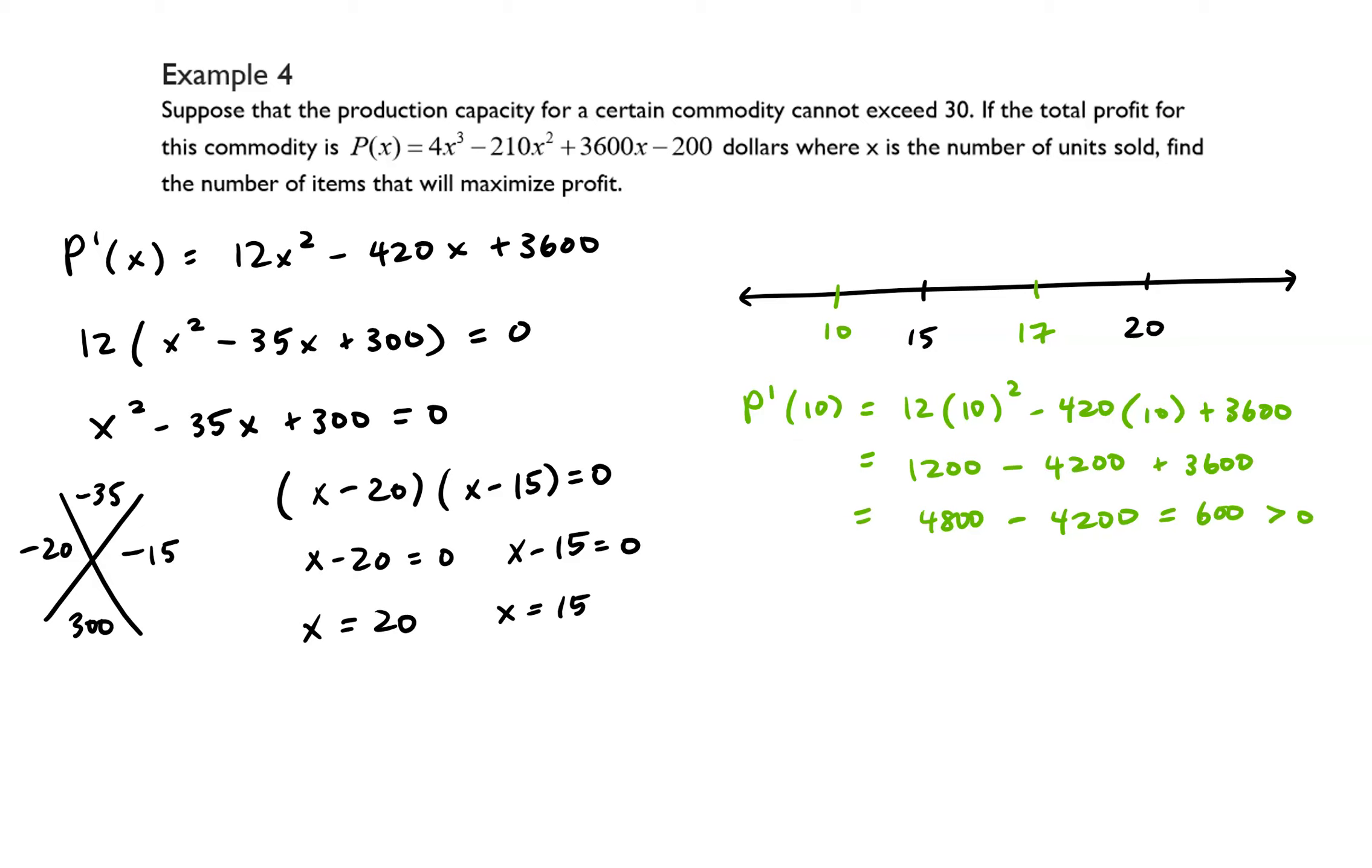Because we're talking about number of units sold, it has to be greater than zero, and we're bounded by 30, so I'm just going to add those endpoints there. So between the interval 0 and 15, our function is increasing. The first derivative was positive which means our original function is increasing.